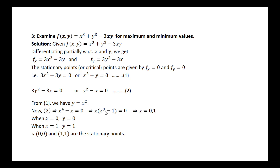Either equate x equal to 0 or x cubed minus 1 equal to 0. If x equals 0, that gives one point. For x cubed minus 1, considering the real value, x equals 1. When x equals 0, y is also equal to 0. When x equals 1, y is equal to 1. Therefore, we got two stationary points: (0, 0) and (1, 1).